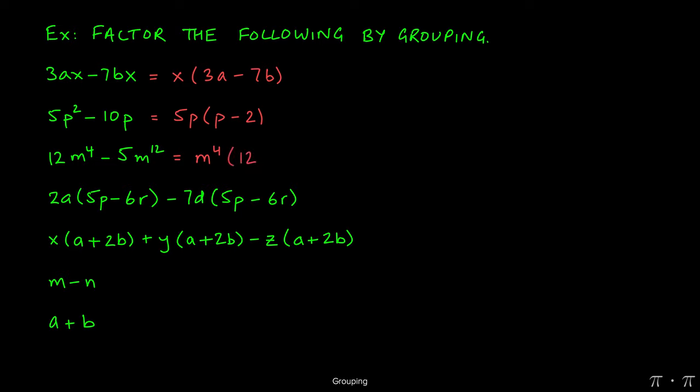Similarly, when we divide negative 5m to the 12th by m to the 4th, we get negative 5m to the 8th. Remember that when bases are same and we're dividing, we subtract the exponents. The top exponent minus the bottom exponent.